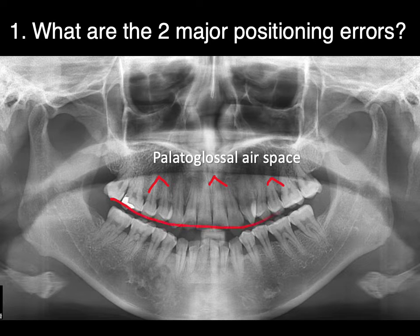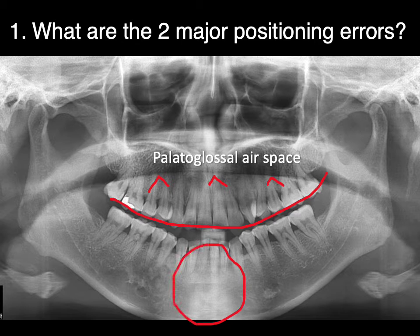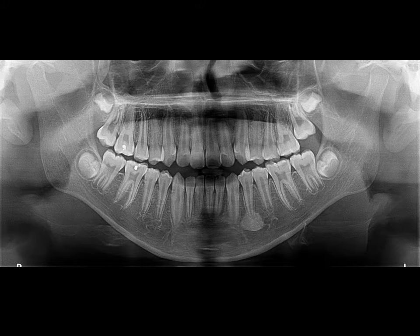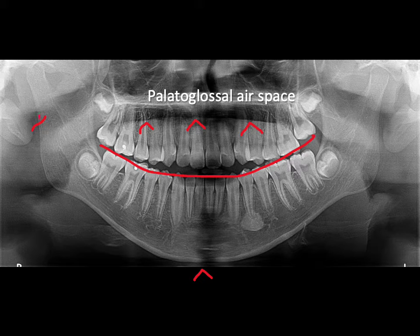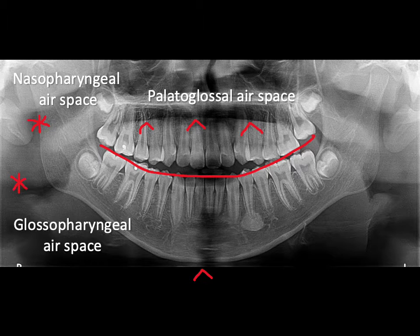The other big error here is this accentuated smile line, and this can make the anterior mandibular teeth fall outside the focal trough because the chin is, in effect, too far back. Here's another film with that accentuated smile line — you can see it's blurry in the anterior region, and there's that palatoglossal airspace. A lot of times when we see films, there are multiple errors. If this is the palatoglossal airspace, that airspace up top is the nasopharyngeal airspace, and the one going down the throat is the glossopharyngeal airspace.